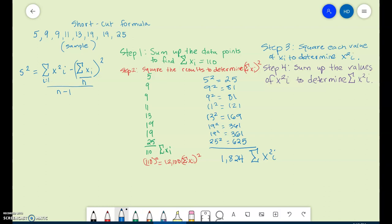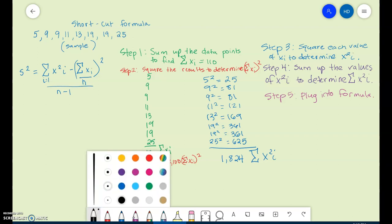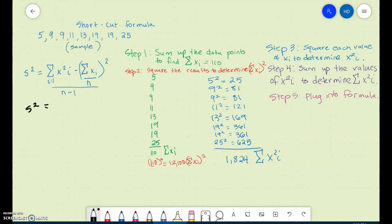Now we are ready for the last step, and this is step 5, which is plug into formula. So we're looking for S², which is your variance, and we're going to plug in everything we just found. The first thing we see in our formula is the sum of X², which is 1,824. Then we want (ΣX)², where we summed it first and then squared it. So that would be the 12,100.